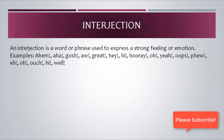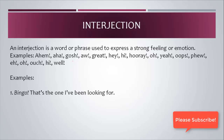Interjections show strong feelings or emotions. Examples include: aha, gosh, awe, great, hey — words that show exclamation, excitement, or strong emotion. For example: 'Bingo! That's the one I have been looking for' — 'bingo' is an interjection. 'Yay! She is going out with us tonight' — 'yay' is an interjection showing great enthusiastic feeling.